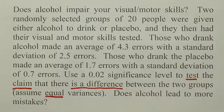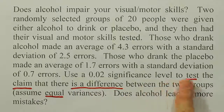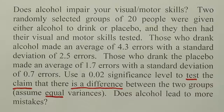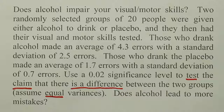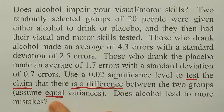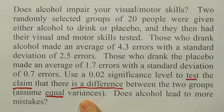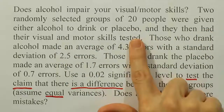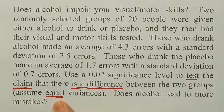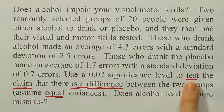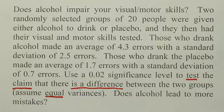Does alcohol lead to more mistakes? When reading the problem, the first thing to determine is which method to use. The phrase 'use a 2% significance level to test the claim' tells us it's a hypothesis test. We're comparing two groups on average error rate — a difference between two means. The phrase 'assume equal variances' signals a small sample size problem, confirmed by the two groups of 20. So this is a small sample hypothesis test with equal variances. Let's work through the seven steps of hypothesis testing.